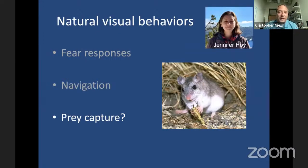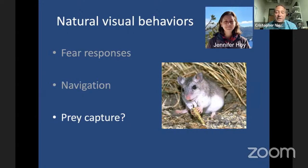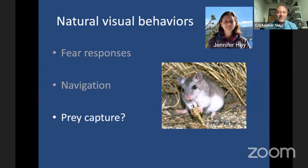My postdoc Jen was wondering if our mice would also use vision to perform prey capture. She was inspired by the grasshopper mouse, which is specialized for a carnivorous lifestyle — it can catch insects, scorpions, and frogs, and has big claws and big teeth. Jen was wondering if our standard C57 black six lab mice would also perform prey capture. I said no way — our lab mice are inbred, they've never seen an insect in their lives. But Jen did the simplest test of just dropping a cricket into the cage, and sure enough, the mouse chases and catches a cricket.